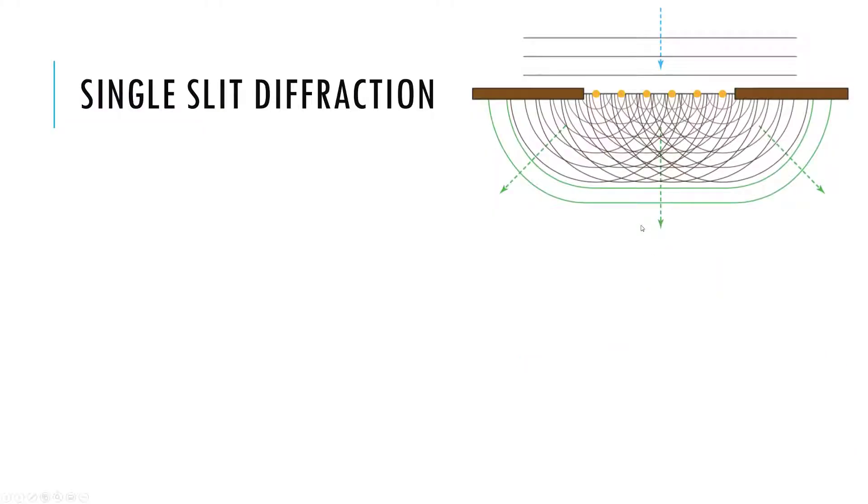And so the main question we want to be asking ourselves is, why slash how am I getting these points of destructive interference? What is interfering if light is just coming through one opening?